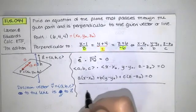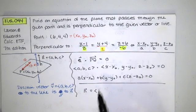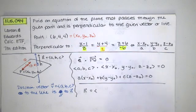So this is what we have. The normal vector to our plane is the same or is parallel to this direction vector for a line.